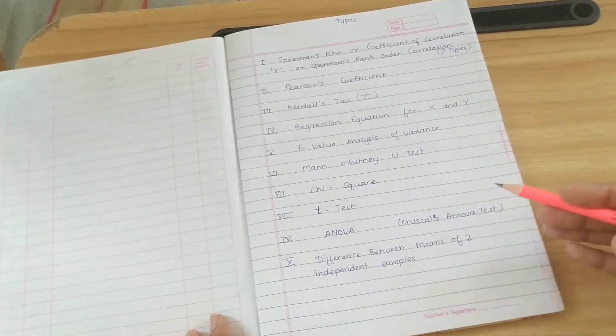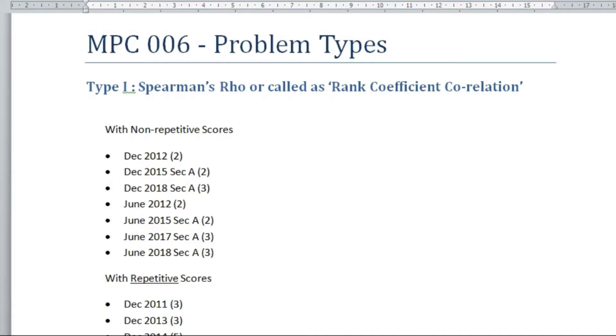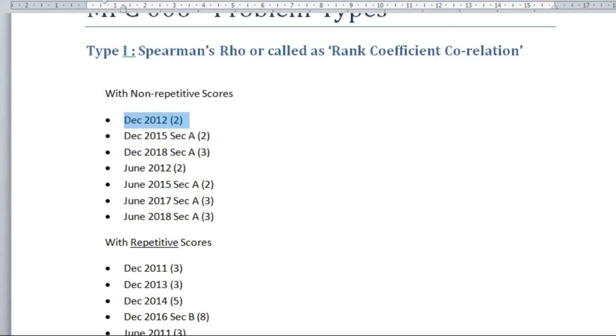I have also listed down all the problems from each year. For example, here you can see the Spearman's rho has repeated in December 2012, 2015, 2018, and so on.